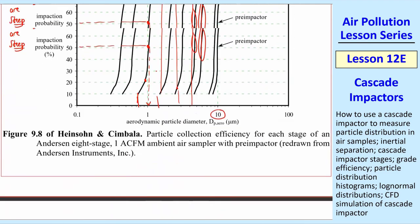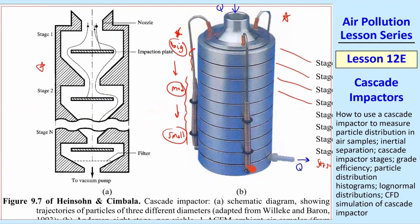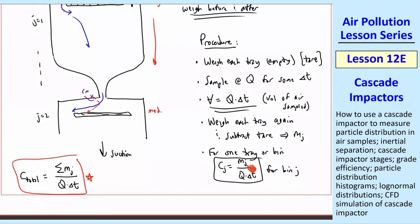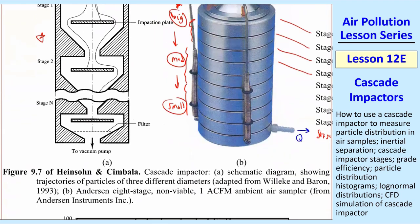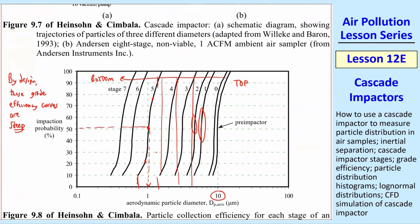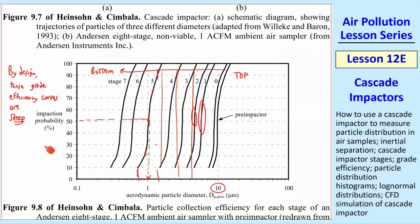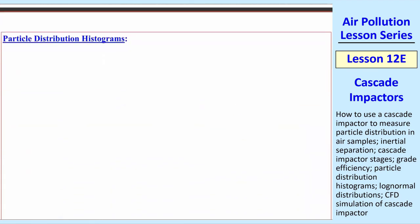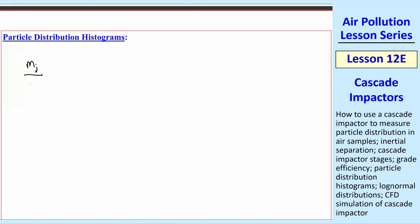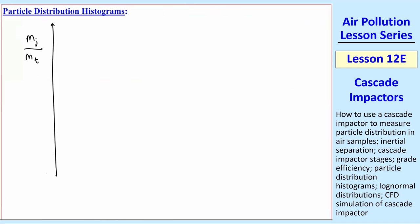So now I want you to think about this cascade impactor, one similar to it, where we've gone through the whole procedure that I talked about. For each bin, we have a mass. And we know the particle range by the design of the cascade impactor. So we have this grade efficiency diagram at our disposal. And so now let's look at a histogram of the particle distribution. We'll plot mj, the mass of that particular bin j, over the total mass that we've collected. Remember, this is after you subtract the tare weight of the trays. Plot that against particle diameter.